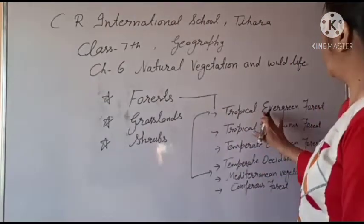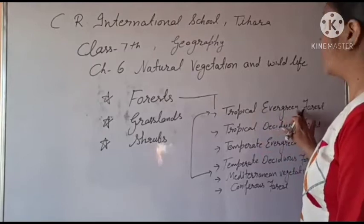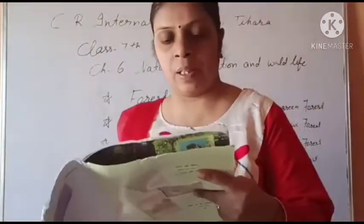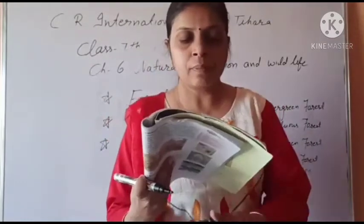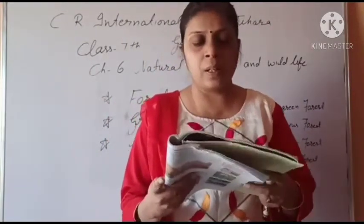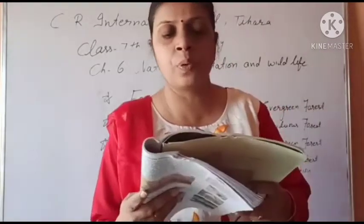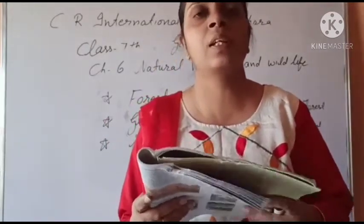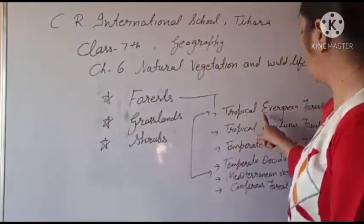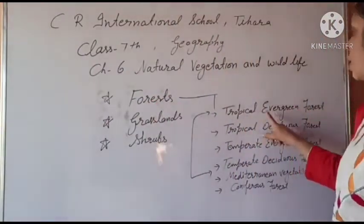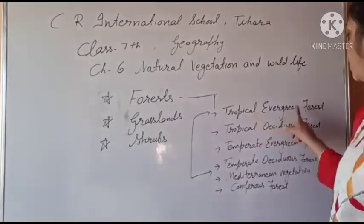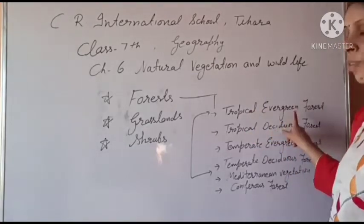First of all, let's talk about Tropical Evergreen Forests — ocean-kati-bandhi, sada-bahar-bandhi. These forests are also called tropical rainforests. So there are two names: Tropical Evergreen Forest and Tropical Rainforest.